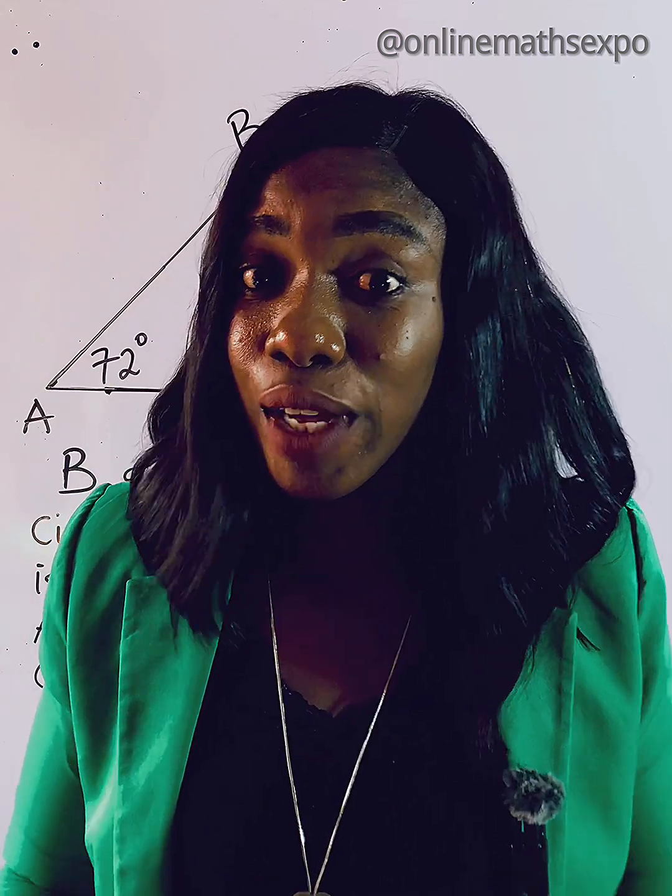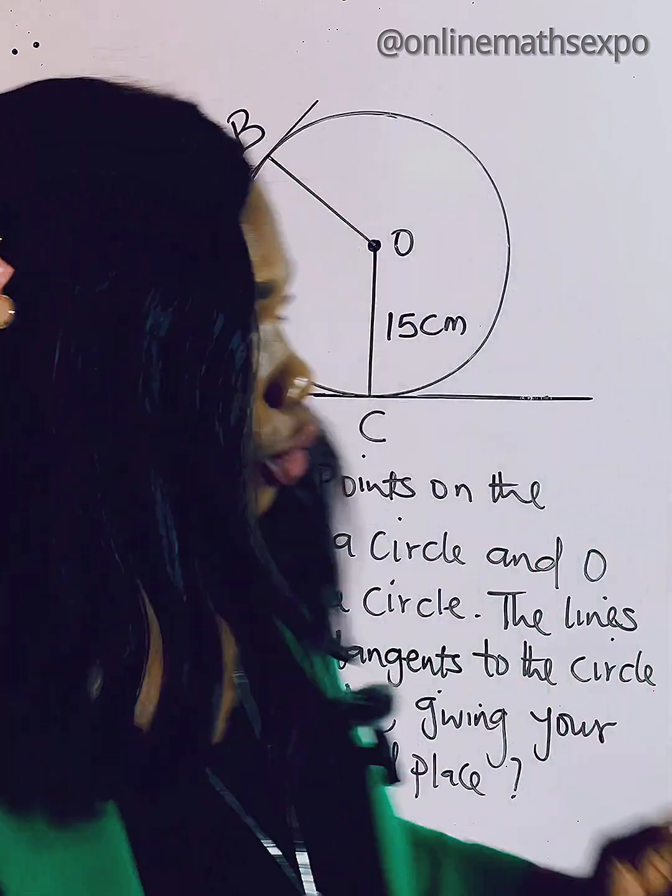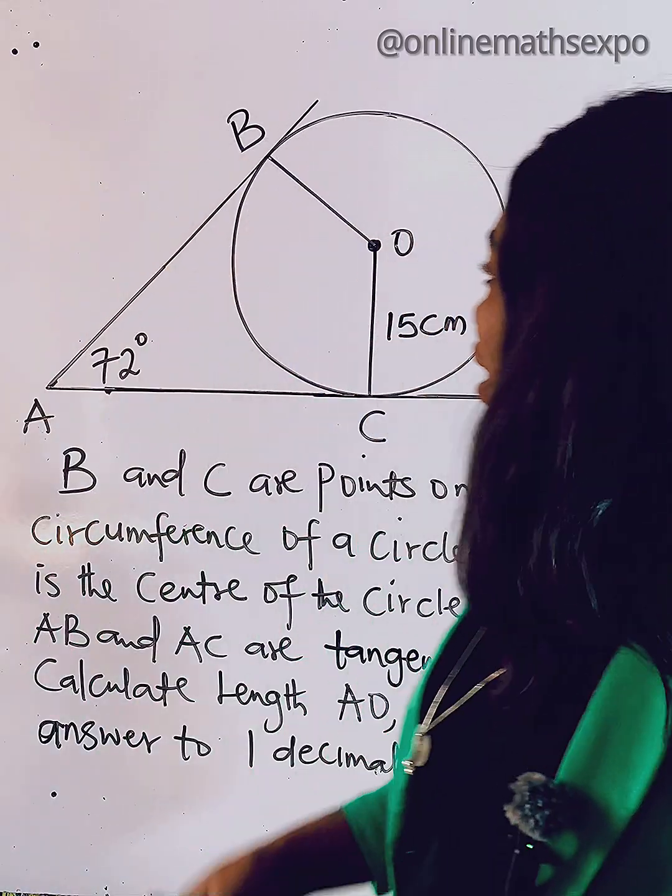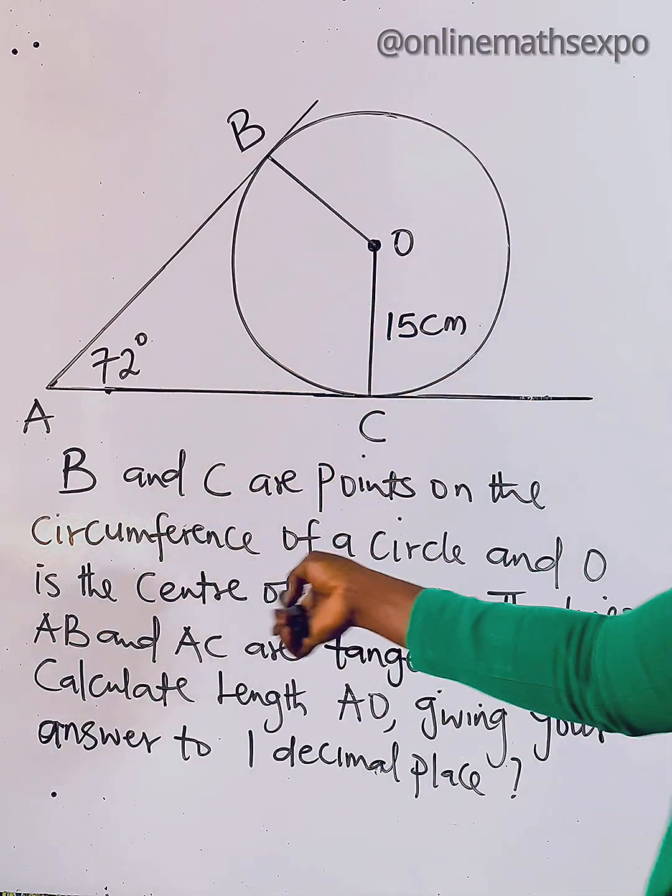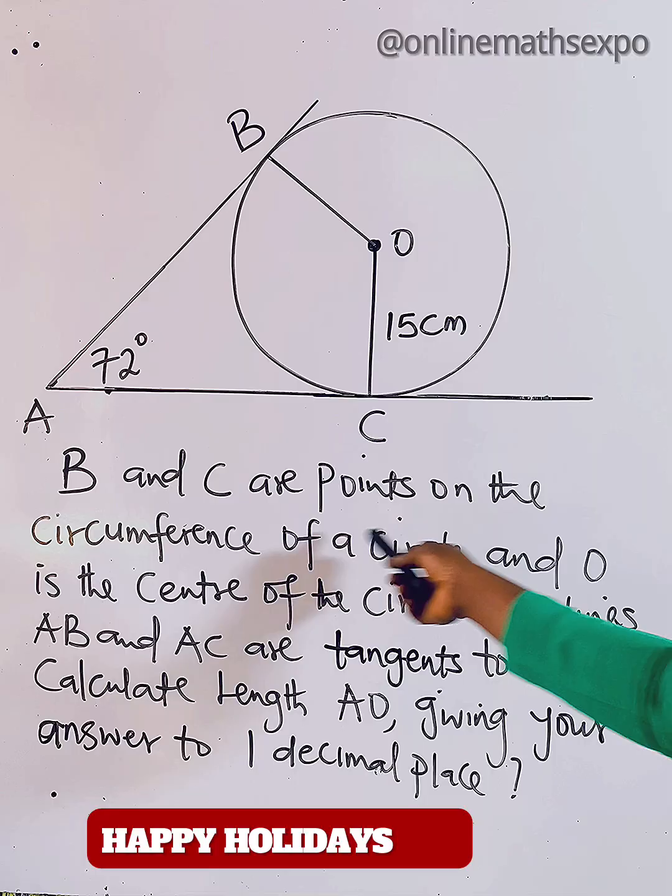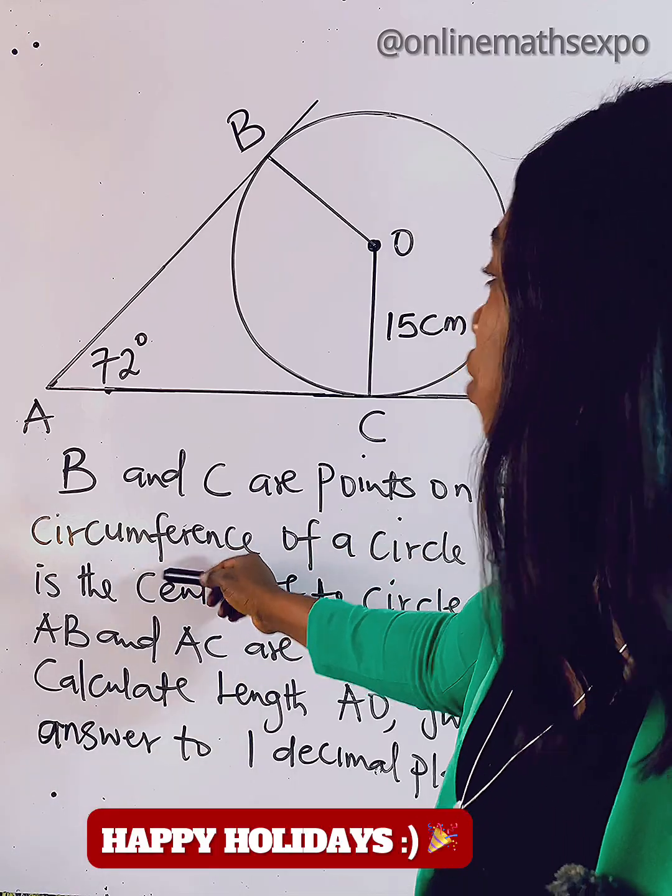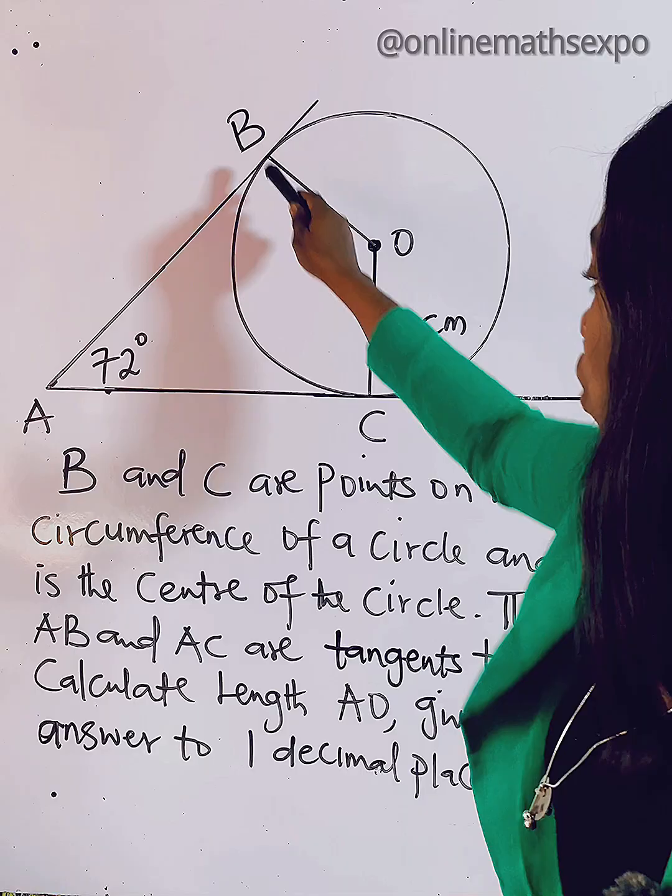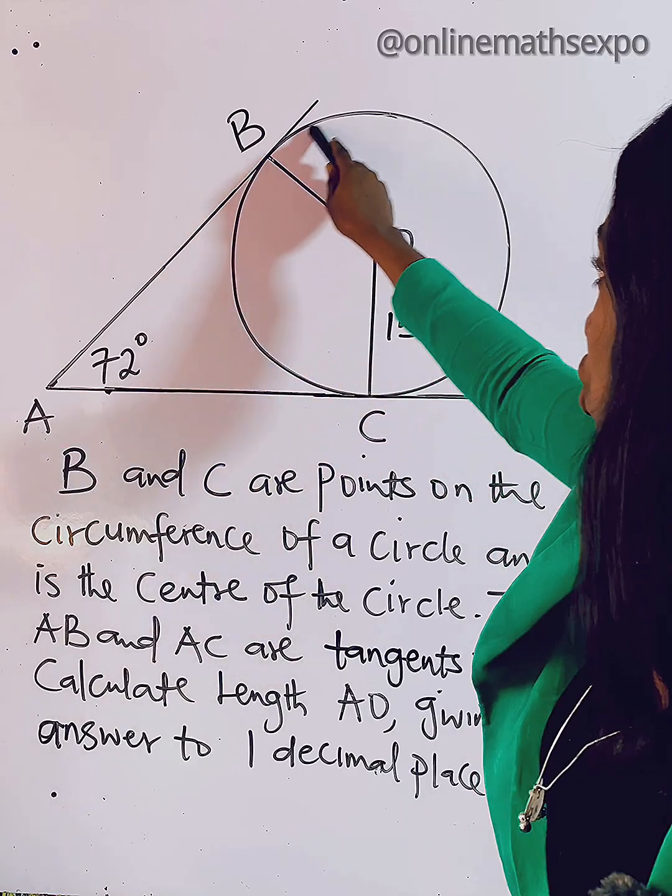Hello and welcome to my channel. Let's solve this beautiful geometry problem together. We are given this diagram and we are told that B and C are points on the circumference - the circumference is just the outer part of the circle, so you can see that's where you can find your B and C on the surface of the circle.